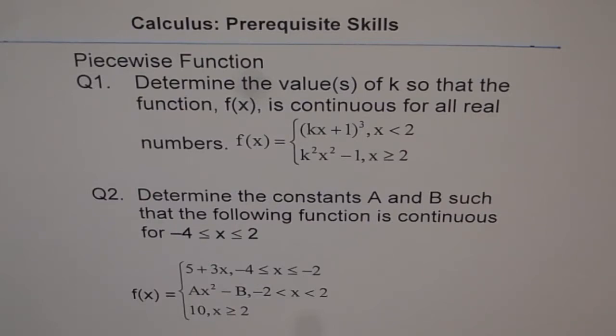f(x) is 5 + 3x where x is between -4 and -2, Ax² - B if x is between -2 and 2, and equals 10 if x ≥ 2. So try to solve these questions.